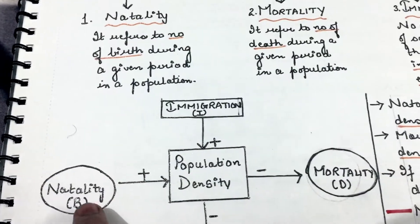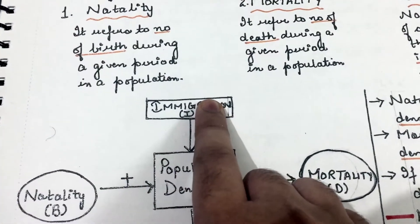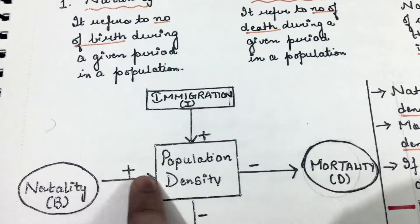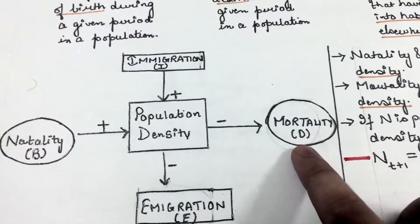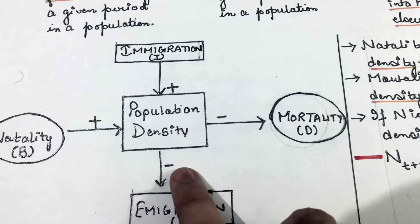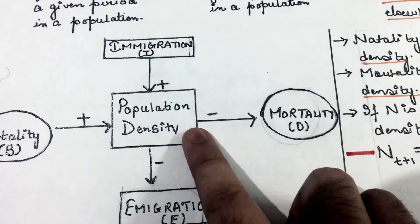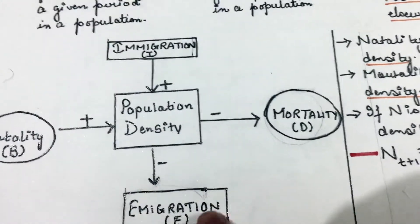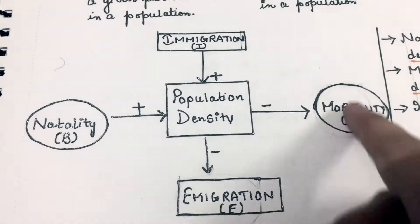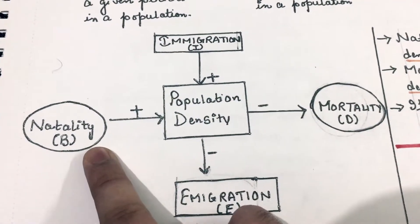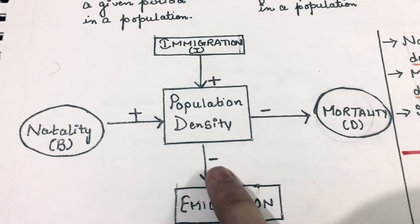Both natality and immigration increase the population density, since natality represents births and immigration represents individuals entering the habitat. Whereas mortality and emigration decrease the population density, as mortality represents deaths and emigration represents individuals leaving the habitat. From this diagram we can see that natality and immigration increase population density, while emigration and mortality decrease it.